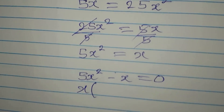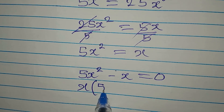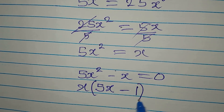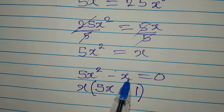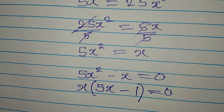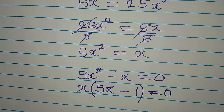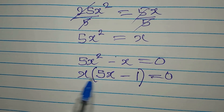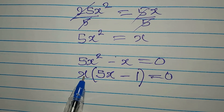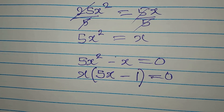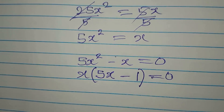We factorize because x is common to both terms. We get x times (5x minus 1) equals zero. If you expand this you get the equation back. Now, if two terms multiply to give zero, it means either one of them must equal zero.